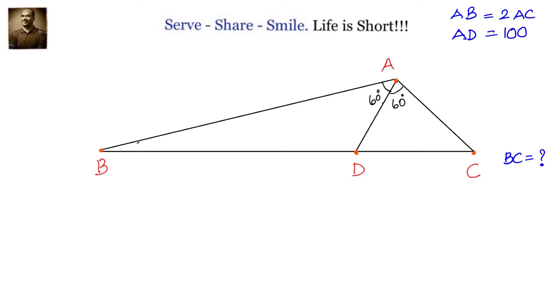Hello friends, let's look at this interesting problem. We have been given triangle ABC in which AB equals 2 times AC and AD is given as 100.